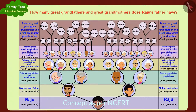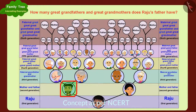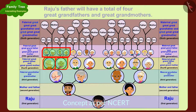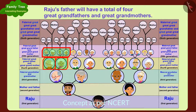Raju's father's paternal great grandfather and great grandmother will be Raju's father's paternal grandfather's and grandmother's parents. In this way, Raju's father will have a total of four great grandfathers and great grandmothers.